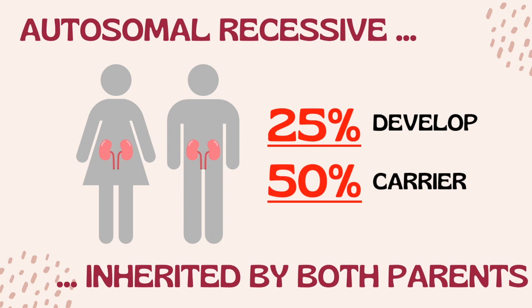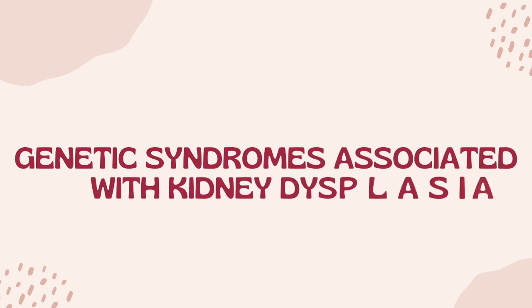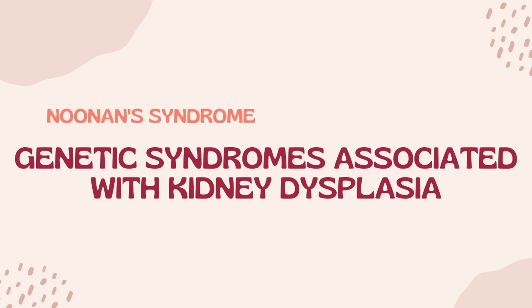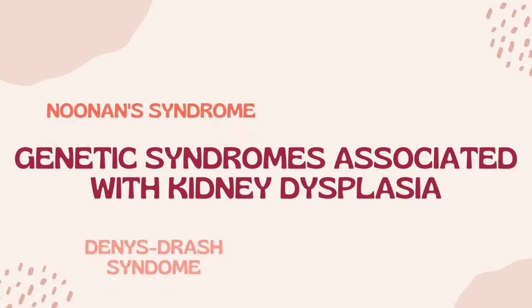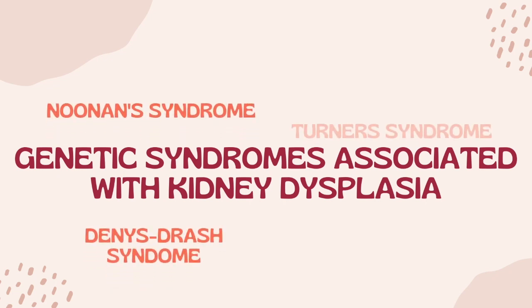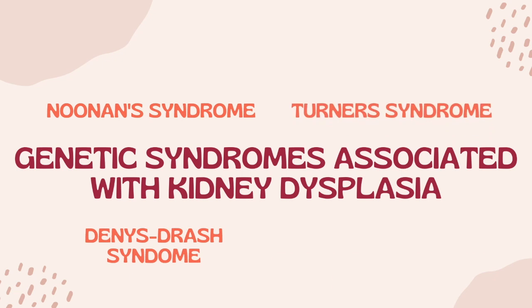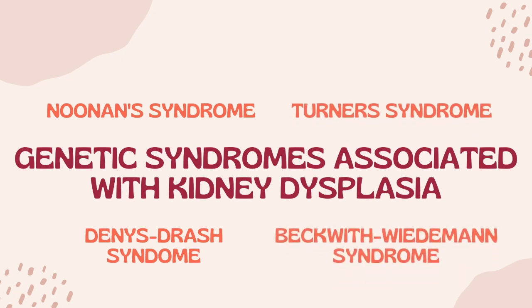Some genetic syndromes can also be associated with kidney dysplasia and often depend on the person's other developmental abnormalities. The syndromes associated include Noonan syndrome, Denys-Drash syndrome, Turner syndrome, and Beckwith-Wiedemann syndrome.